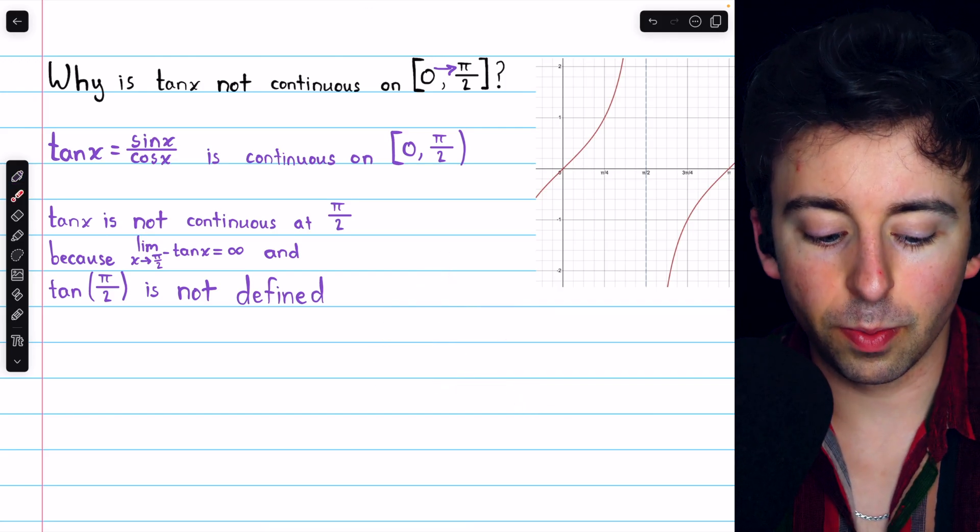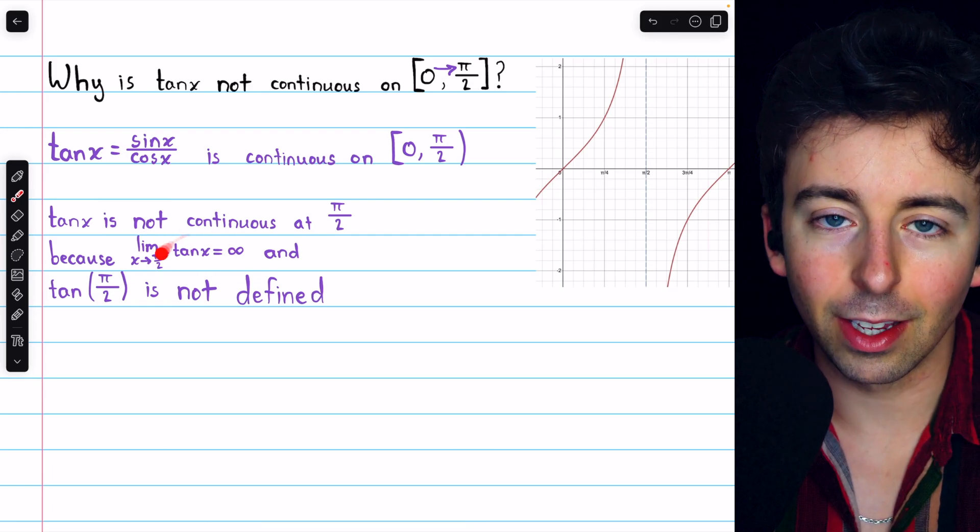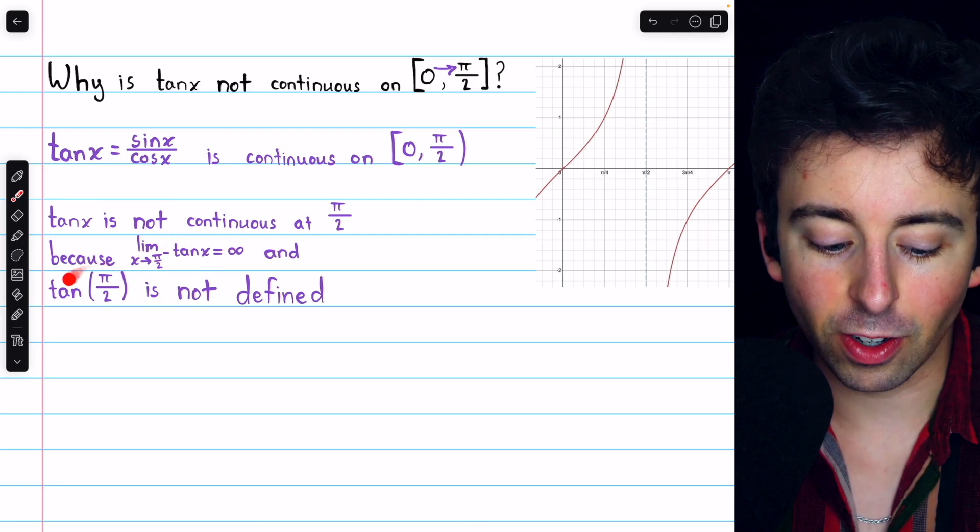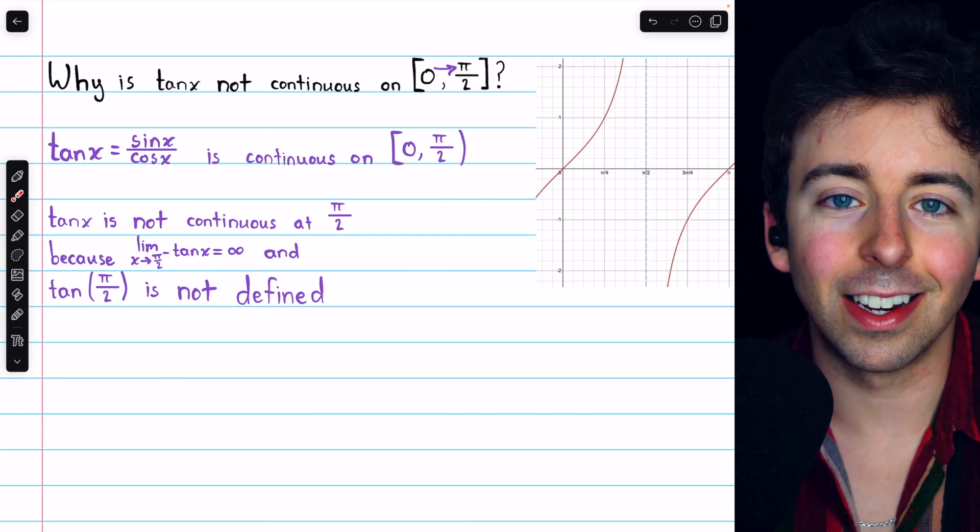But we also have the other issue, that tangent of pi over 2 is not defined. No matter what its limit is, whether it exists or not, tangent does not exist at pi over 2. So again, it's definitely not continuous.